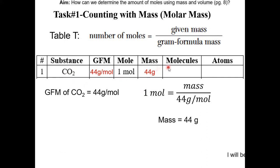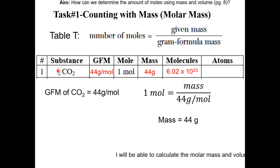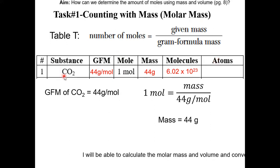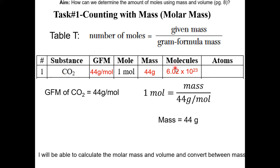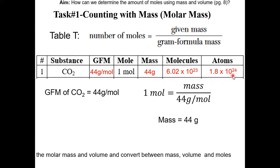How many molecules is that? Since we have one mole, that would be 6.02 × 10²³ carbon dioxide molecules. How many atoms is that? In one molecule of CO2, we have three atoms — one carbon, two oxygen — so we multiply 6.02 × 10²³ by 3. That gives 1.8 × 10²⁴ atoms.